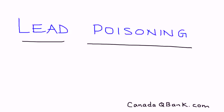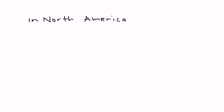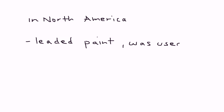Lead poisoning used to happen a lot, and still happens in North America, in particular in old homes. The reason is because these homes have something known as leaded paint, which was commonly used in homes until about 1960.